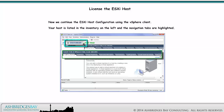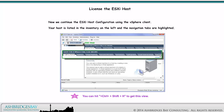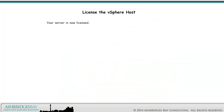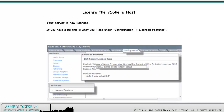Your host is listed in the inventory on the left and the navigation tabs are highlighted. You can hit Ctrl-Shift-H to get this view. Navigate to Configuration > Licensed Features under Software. BEs will be licensed. This host is running on an evaluation license. Click Edit to assign a new license or to view the existing one. Your server is now licensed.